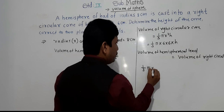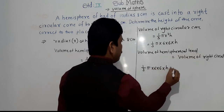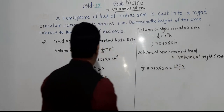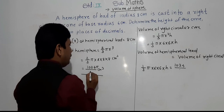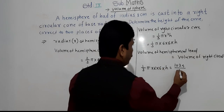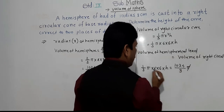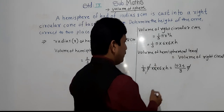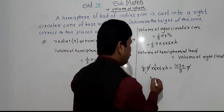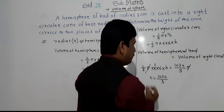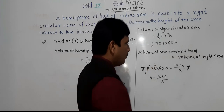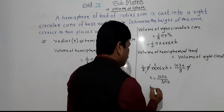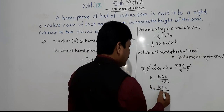So: 1 by 3 into pi into 6 into 6 into H equals 1024 pi divided by 3. Pi cancels on both sides. We get 36 H equals 1024 divided by 3, so H equals 1024 divided by 36.